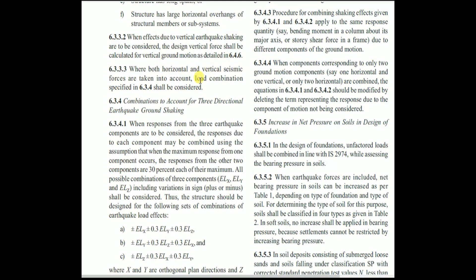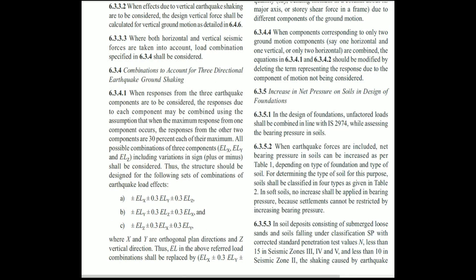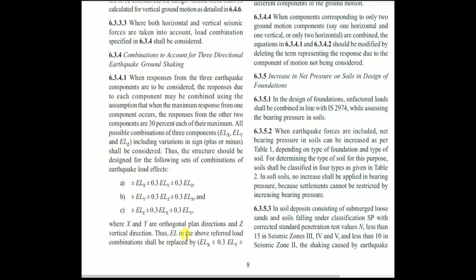Where both horizontal and vertical seismic forces are taken into account, load combinations specified in clause 6.3.4 shall be considered. For three-directional earthquake ground shaking, when the maximum response from one component occurs, the responses from the other two components are taken as 30 percent each. The combinations are: ELx ± 0.3 ELy ± 0.3 ELz; ELy ± 0.3 ELx ± 0.3 ELz; and ELz ± 0.3 ELx ± 0.3 ELy, where X and Y are orthogonal plan directions and Z is vertical.